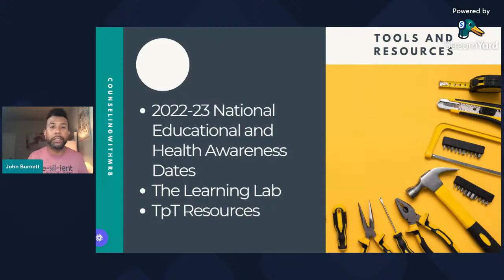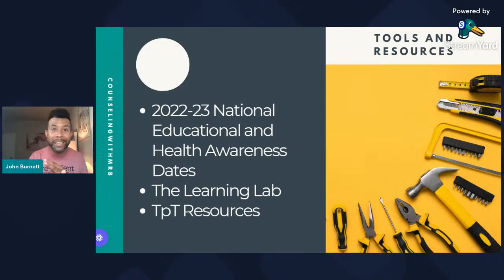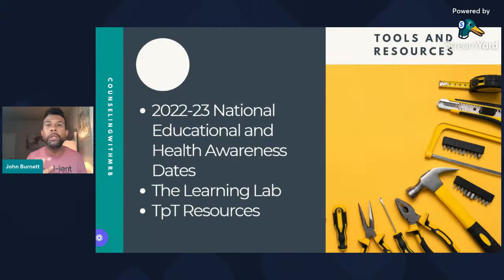Here are some tools I would suggest. The National Education and Health Awareness States calendar — the new one just came out. There's a running document that has all the monthly, weekly, and daily awareness themes, and you can plan your school counseling lessons, events, and programs along with that. Just go to Google, type in 'ASCA Awareness Calendar,' and it's the first result that pops up.